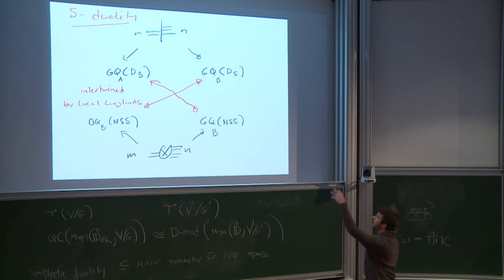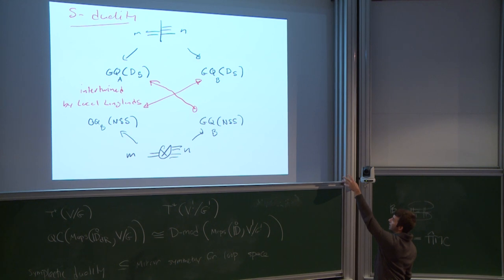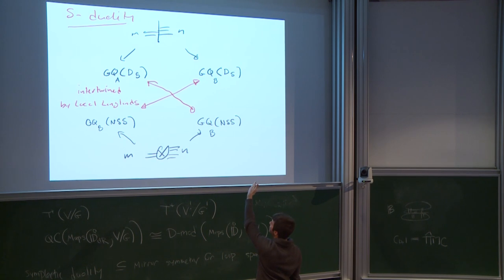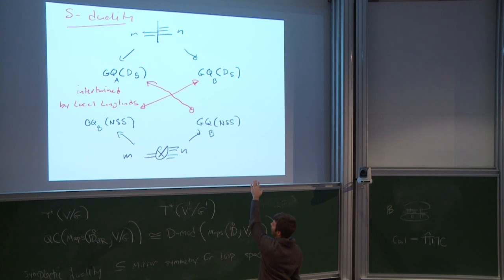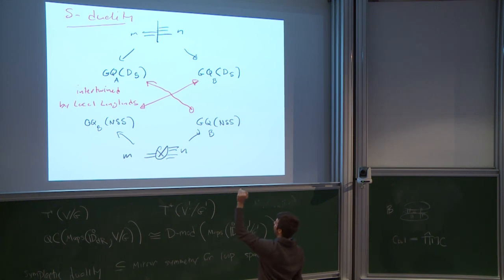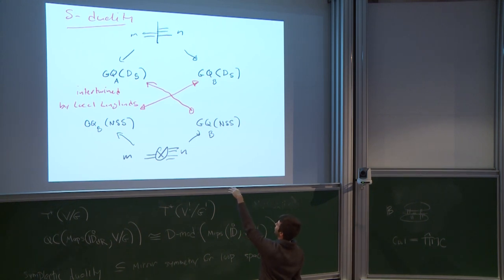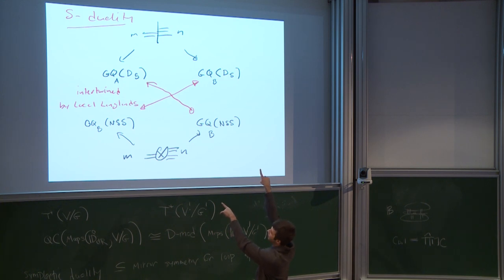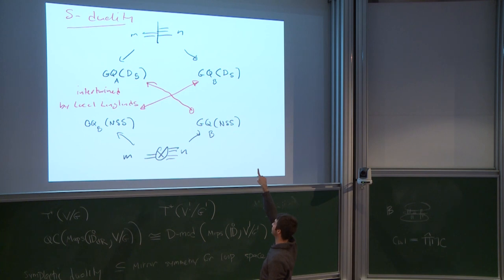The statement of S-duality is that the D5 brane produces two different objects: an A-side object and a B-side object through geometric quantization. The only hard one is the B-side D5 — that's the only one we don't already know. These things are functors between sheaves of categories on Bun_{GL(m)} de Rham and Bun_{GL(n)} de Rham, or between LocSys_{GL(m)} and LocSys_{GL(n)}, and they're supposed to be intertwined by local Langlands equivalences on both sides, giving a commutative square. The big problem is to identify what the B-side geometric quantization of the D5 brane actually is.